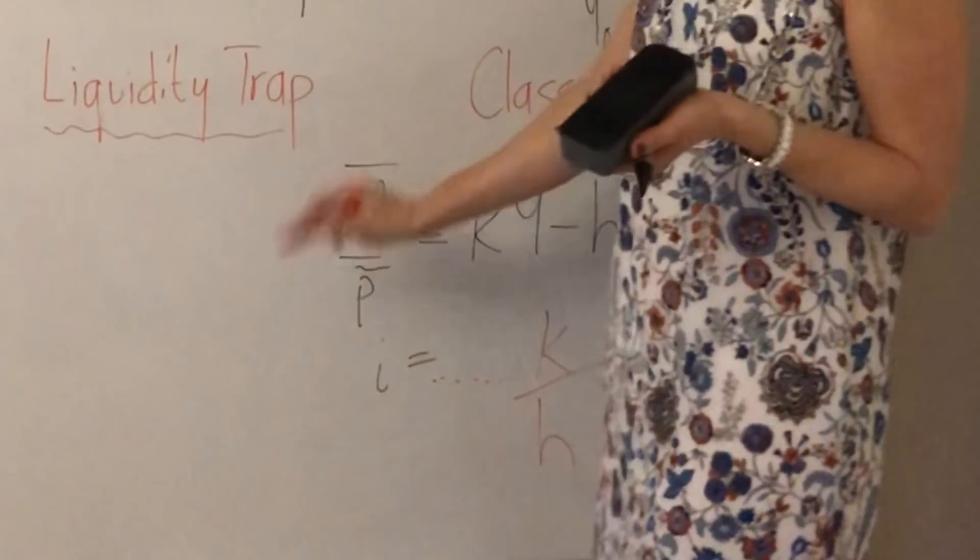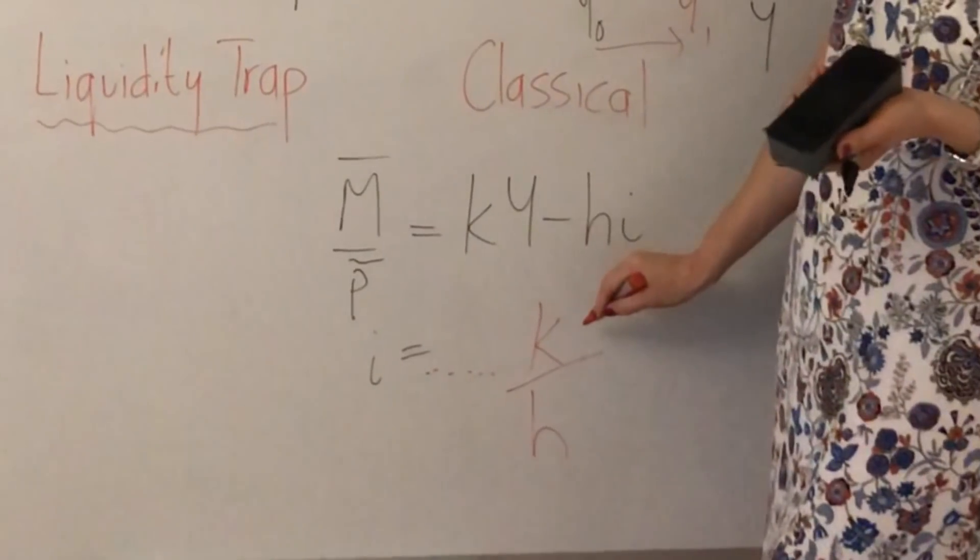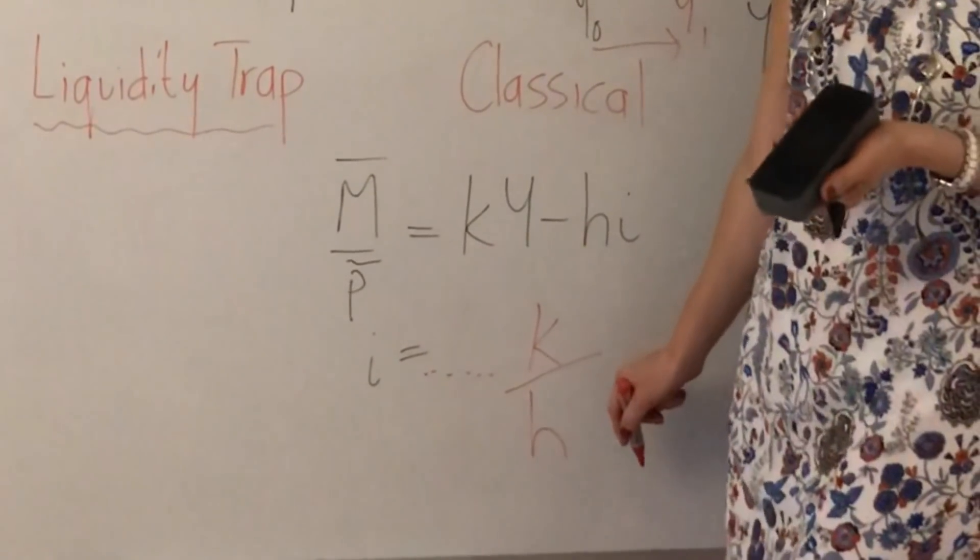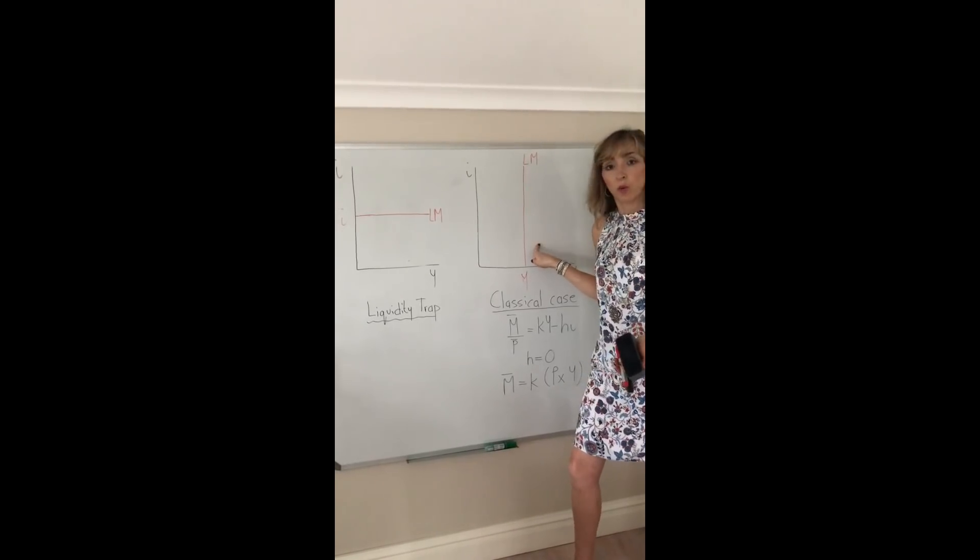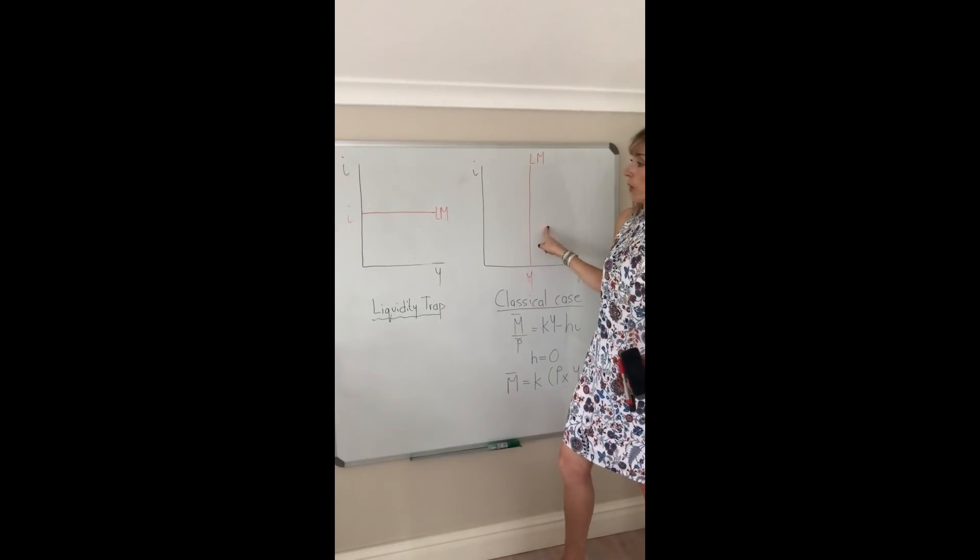So the steeper the LM curve, the higher is K, the lower is H. So in this situation we've got a very small H. At the extreme, we've actually got H equal to zero.